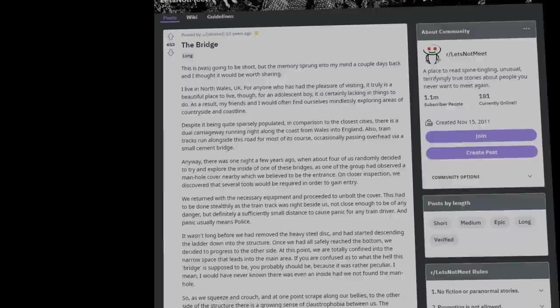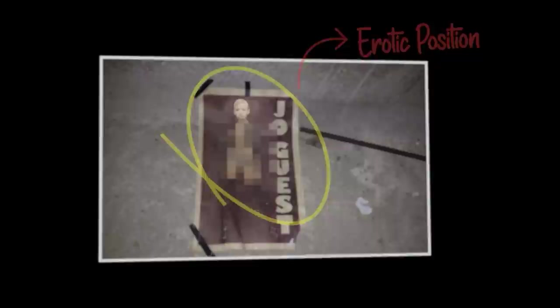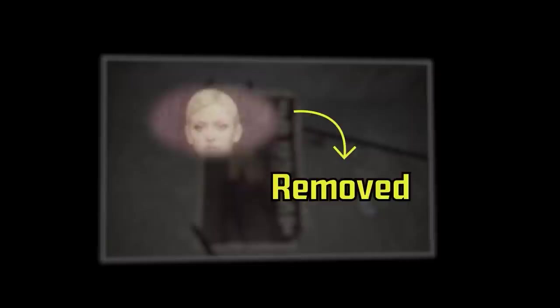He went on to describe the claustrophobic journey in detail and states that at some point, they came across a room which chilled them to the core. Quote, In front of me was a single foldaway chair, positioned facing a wall. On the wall was a partially torn page from a newspaper or magazine, showing a fully naked lady in an erotic position. More disturbingly, the eyes of the woman on display had been cut from the page, removed with precision, not just hastily ripped off.